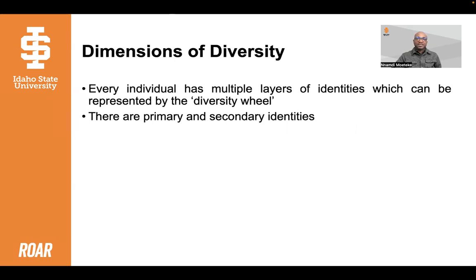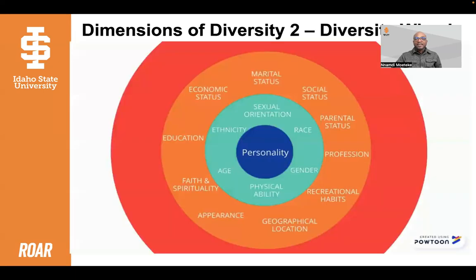Diversity can be better understood by looking at the diversity wheel, which represents the multiple layers of identities that we all have. There are the primary dimensions or core identities. These identities are closest to the core of a person's personality, because these are identities that we were either born into or carried the longest throughout our lives. They include gender, sexual orientation, race, ethnicity, national origin, and age.